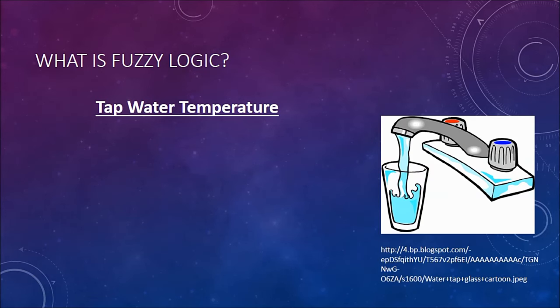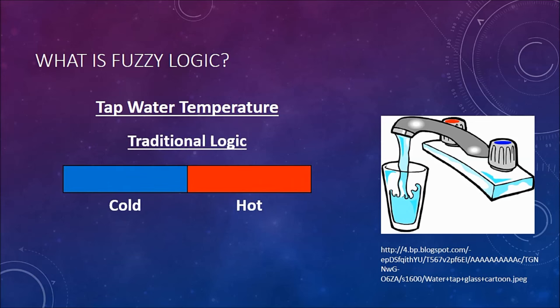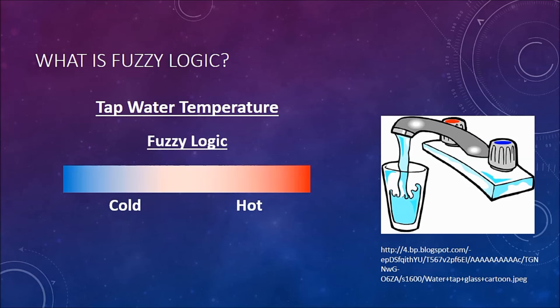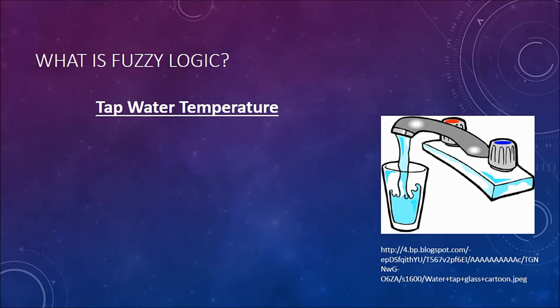So let's use tap water temperature as an example. In traditional logic, you would have this represented by either being hot or cold, representing 0 or 1 respectively. With fuzzy logic, you could have a gradient from hot to cold, so you could have something that is lukewarm, very hot, slightly cold, etc., instead of just hot or cold.